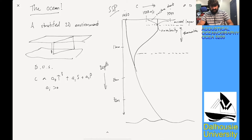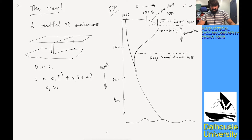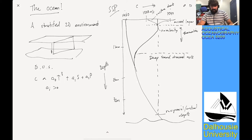There's a deep ocean minimum, below which the pressure term takes over and turns the sound speed profile into essentially a linear thing. That minimum is called the sound channel axis, or sometimes the deep sound channel axis. The depth at which the sound speed profile equals the surface value is called the critical depth. This stratification leads to many interesting effects in ocean acoustics.